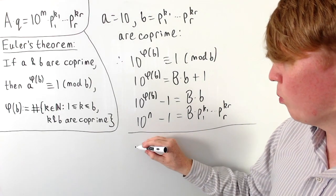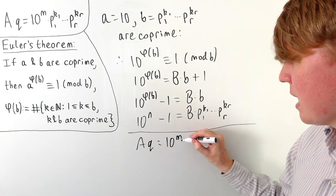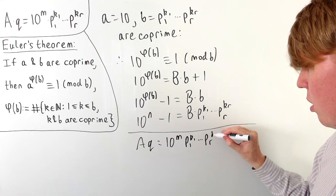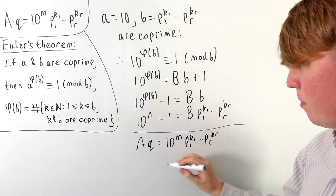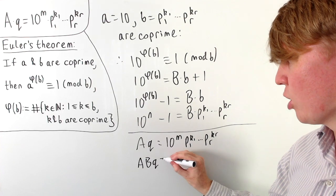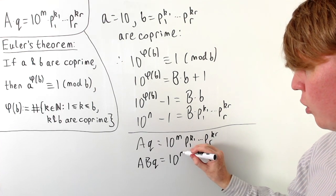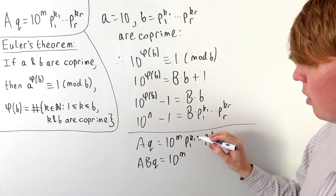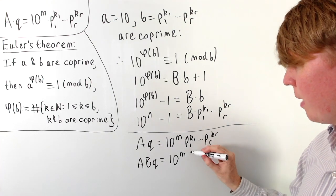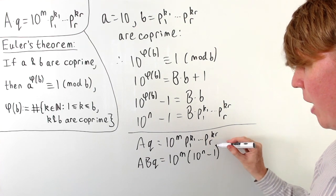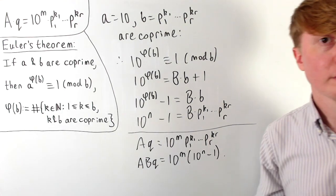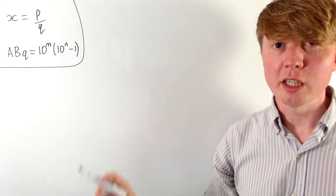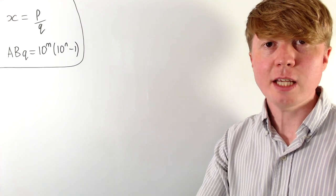Because A times Q is of the form 10 to the m times all of our remaining prime factors, we just need to multiply by b now. So A times B times Q is now going to be of the form 10 to the m, and then multiplying by b replaces all those prime factors with 10 to the n minus 1.